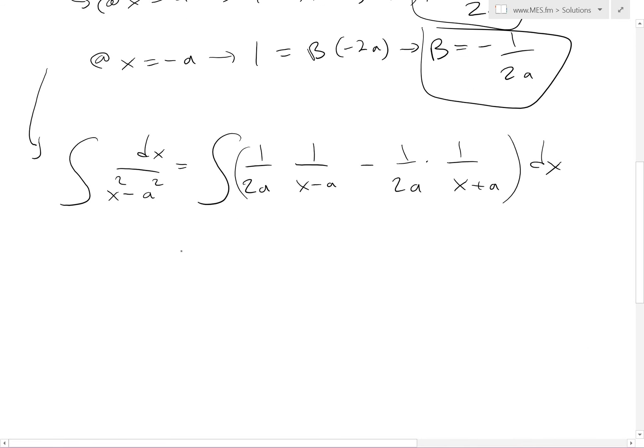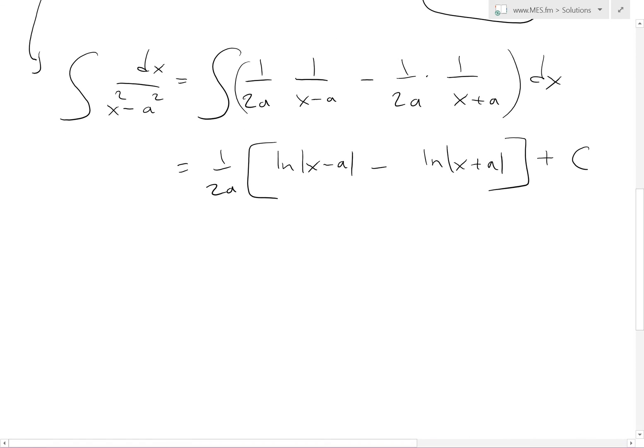And now we can basically just solve this integral. We can take the 1 over 2a out. This equals the integral of 1 over x minus a, that's just ln of absolute value of x minus a. And now we subtract ln of absolute value of x plus a, and then we add a constant C at the end.